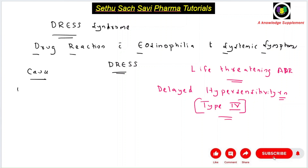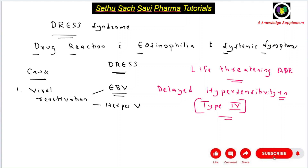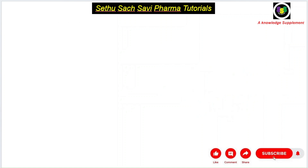Coming to the causes: one reason is the reactivation of certain viruses. Viral reactivation — especially Epstein-Barr virus (EBV) and herpes virus — can cause this syndrome. The second main reason is drugs, which is why this is classified as a life-threatening adverse drug reaction.